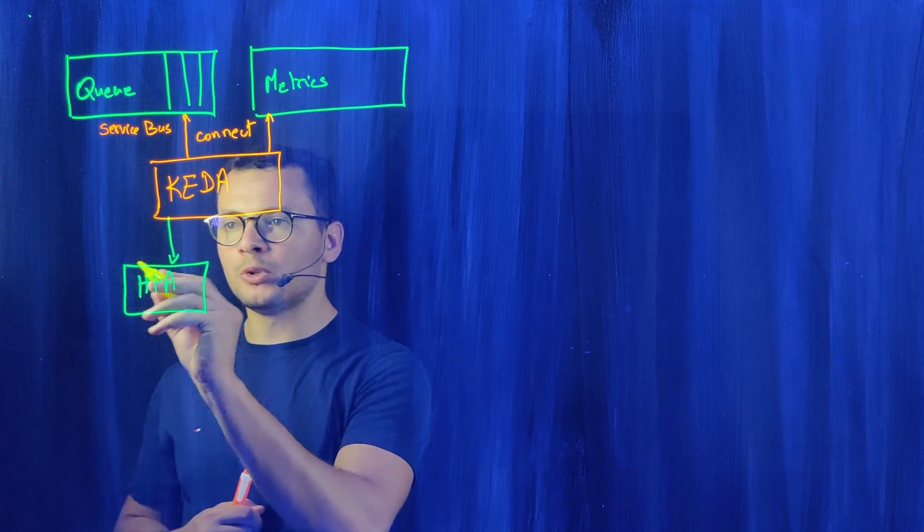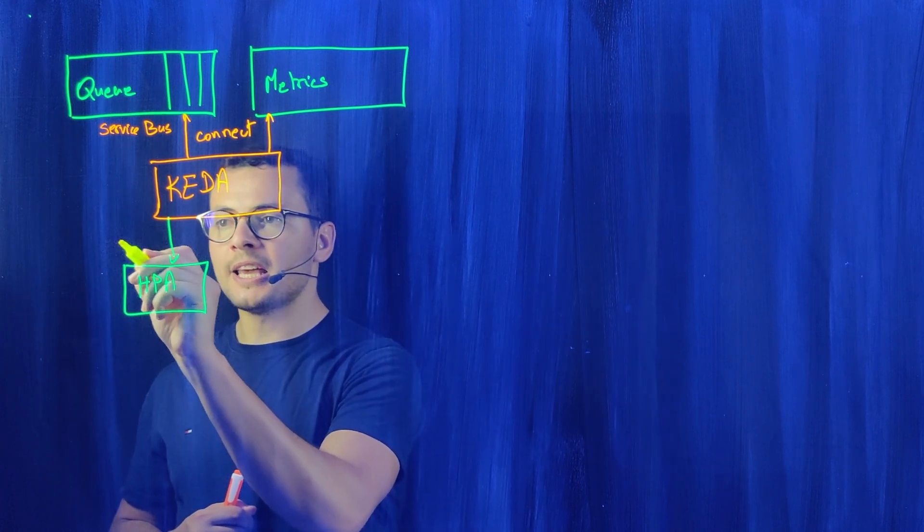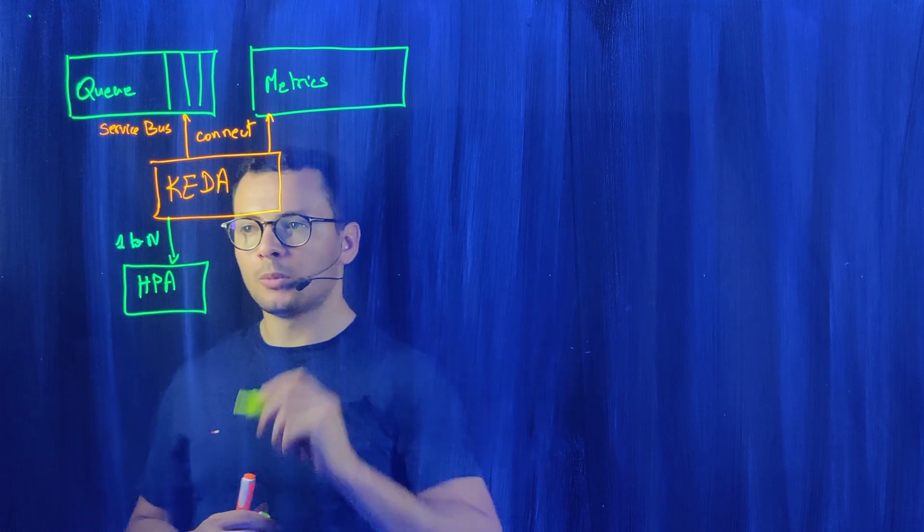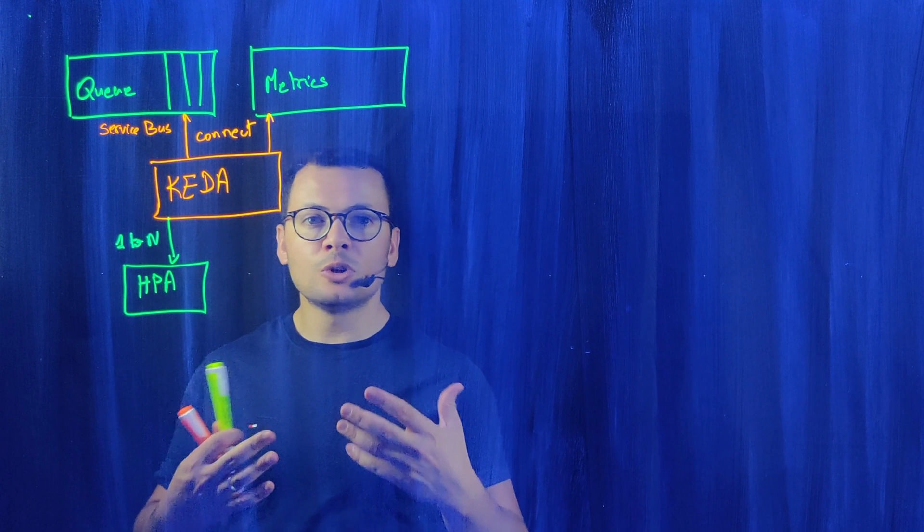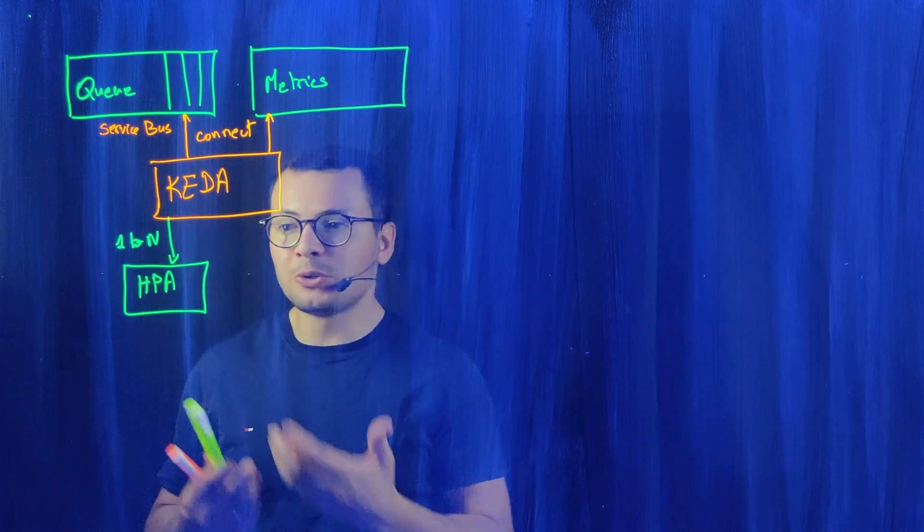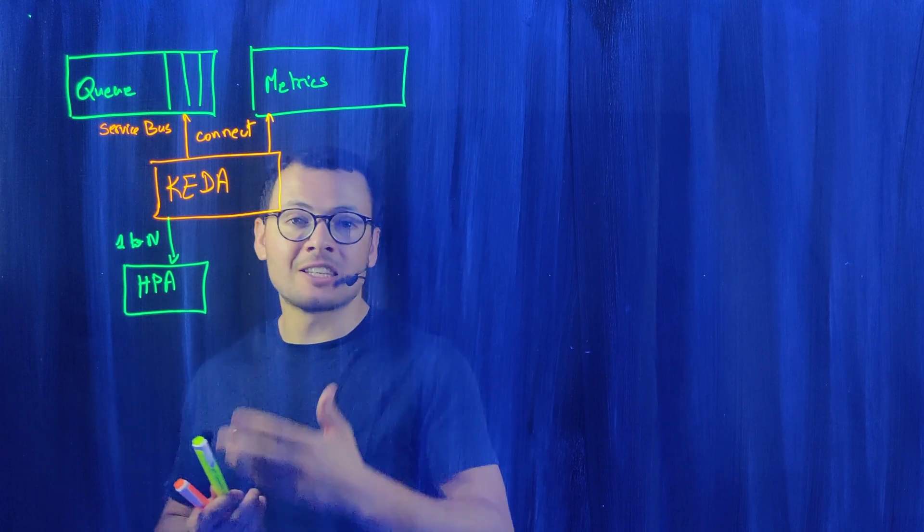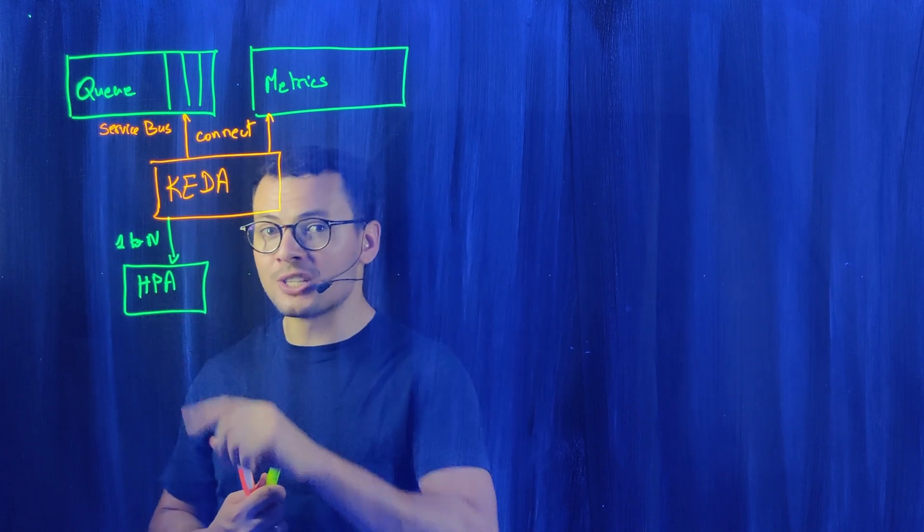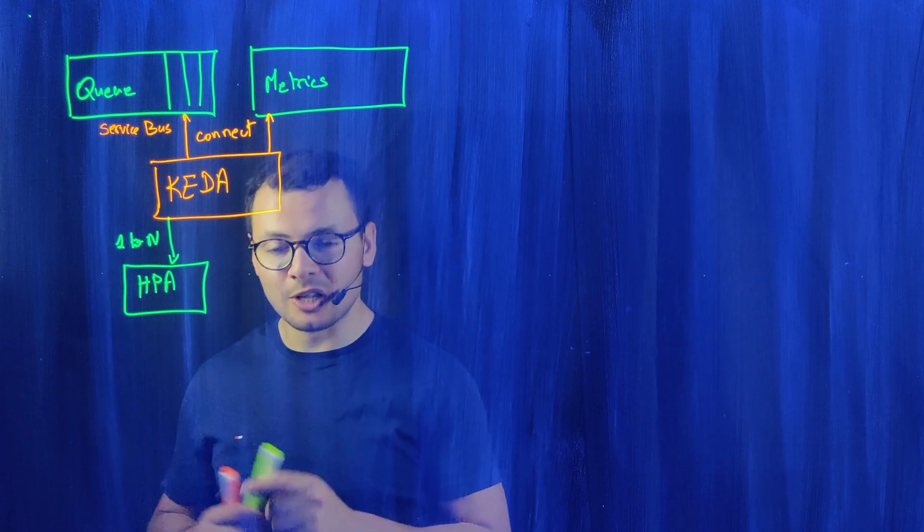Using the HPA to be able to say, I want to scale between one pod to n pods. If you want to deactivate the pods, if we don't need any pod running, then we can set that number to zero. And we cannot do that with HPA, at least not today.